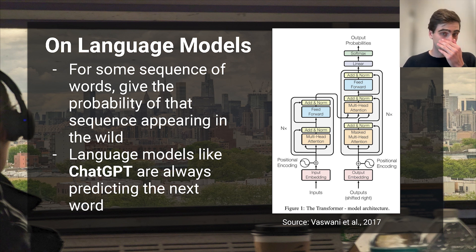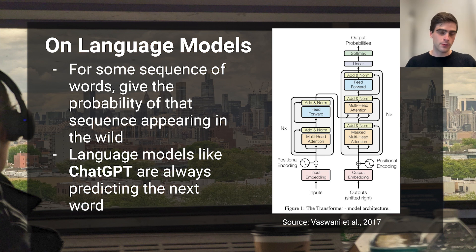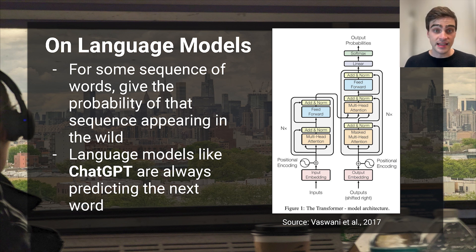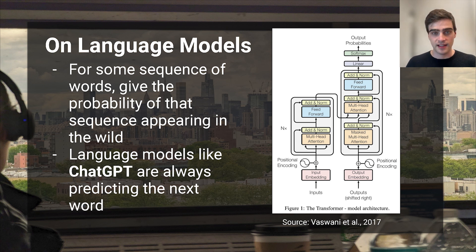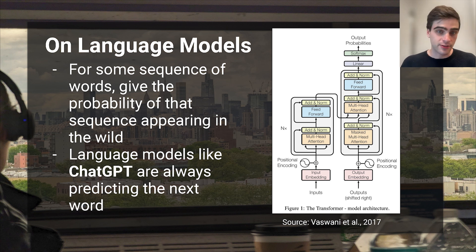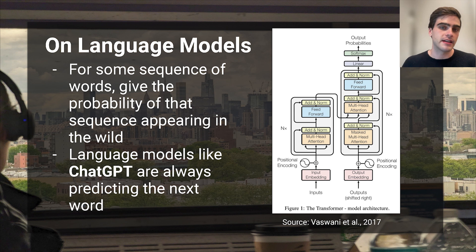This means that you can use language models to give you the next most likely word. If you were to give a language model the words 'United States of,' it might say it's 60% probable that 'America' would follow, perhaps 15% likely for 'Mexico' to follow, and then some infinitesimal value for 'Canada' or 'pizza.' So given that it's 60% likely that 'America' would follow, let's pick that word. Now we have the string 'United States of America.' We can give the language model the string back and see what it thinks is most likely to follow — and we pick that word, repeating this process over and over again.